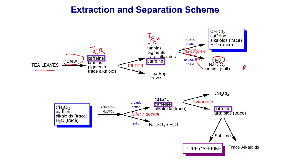So tannin gets deprotonated to give a salt form in aqueous solution. Once the tannin has reacted with sodium bicarbonate, you then add dichloromethane, which is an organic solvent. Organic solvents partition with aqueous water to form two layers. In the organic phase, you get alkaloids and caffeine along with some water and dichloromethane.